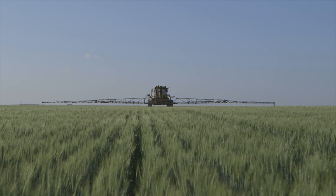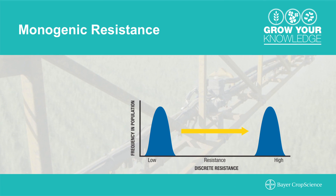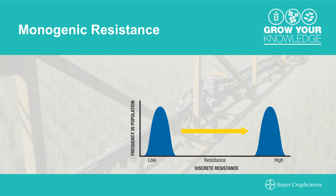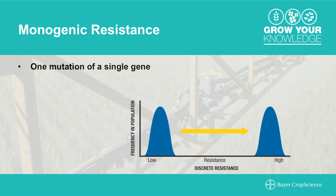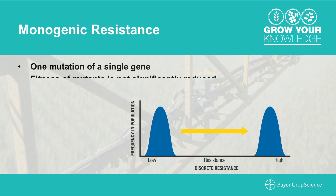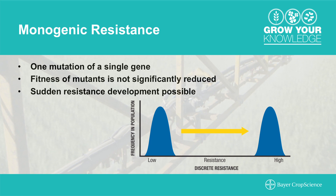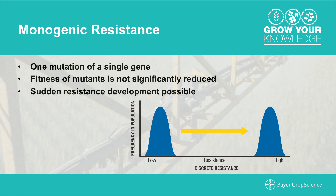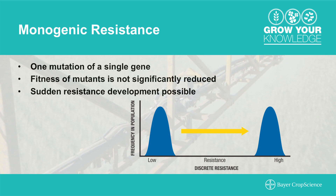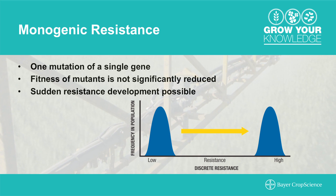When looking at resistance to fungicides, there are really two main types that can occur in the field, dependent on the mode of action being utilized. For strobilurin resistance, it has been determined to be monogenic — meaning single-gene resistance. It's essentially an on-off switch: you either have full and outright resistance or there's no resistance, with nothing in between. A single mutation changing a single amino acid sequence confers 100% resistance.